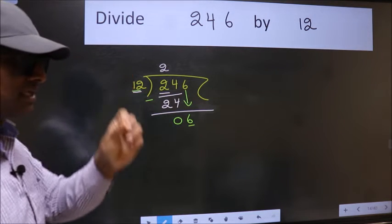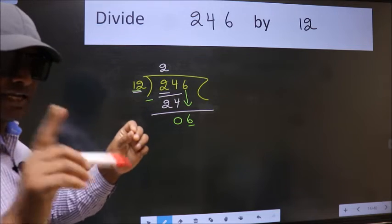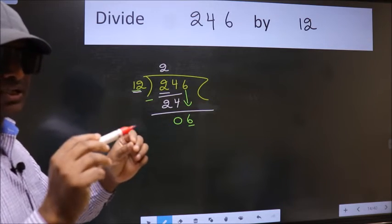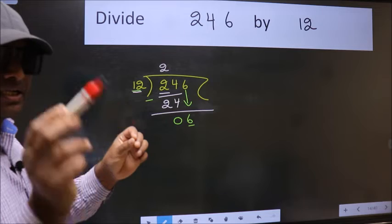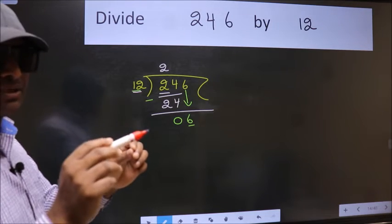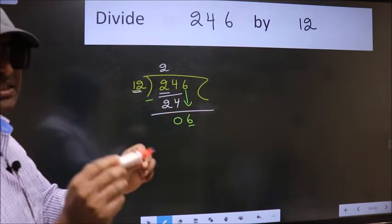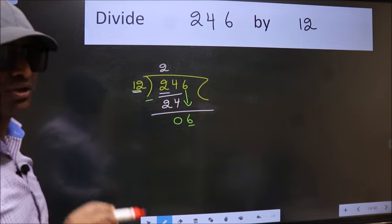I repeat: bring down the number and also put a dot and take 0 — both at the same step, you should not do.